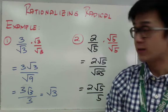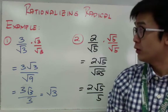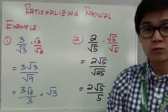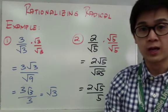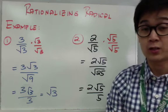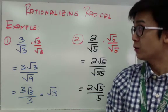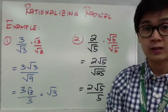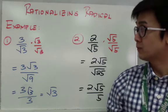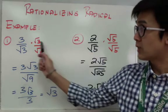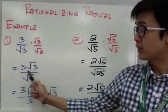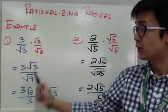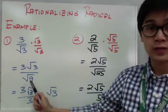For the first fraction, to rationalize 3 over square root of 3, we multiply both the denominator and the numerator by square root of 3, with the goal of getting rid of the radical in the denominator. So 3 times square root of 3 is 3 square root of 3, and square root of 3 times square root of 3 is square root of 9.